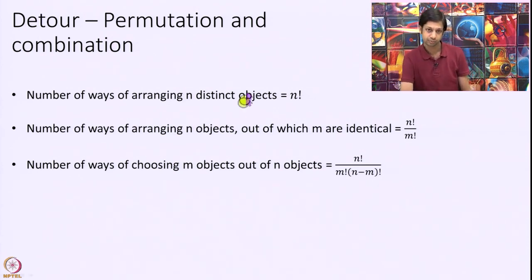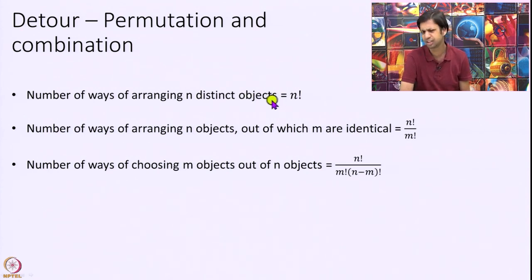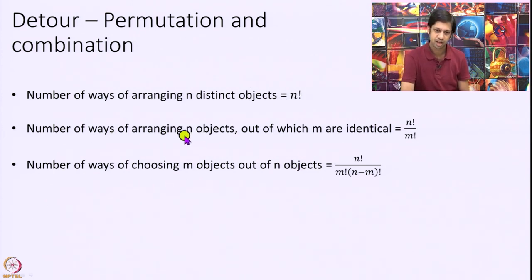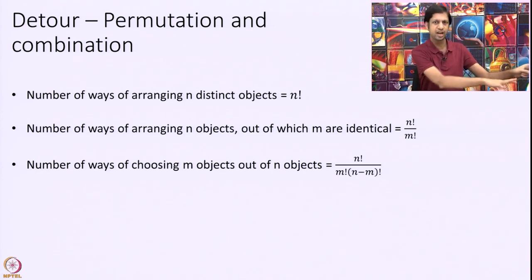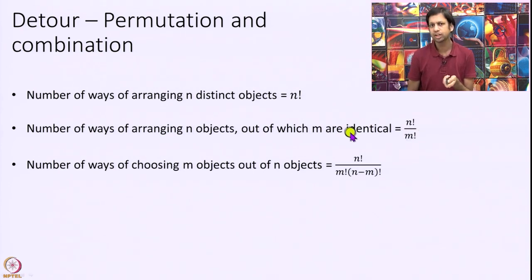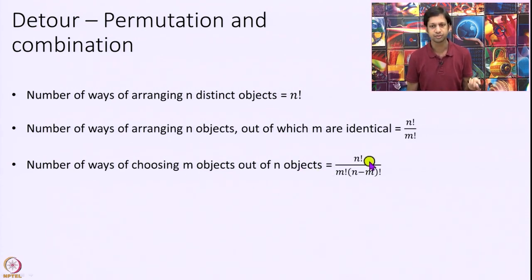Three principles: First, the number of ways of arranging N distinct objects is N factorial. Second, the number of ways of arranging N objects out of which M are identical is N factorial over M factorial — generalizing, if M1 and M2 are identical groups, it is N factorial divided by M1 factorial times M2 factorial. Third, the number of ways of choosing M objects out of N is N factorial divided by M factorial times (N minus M) factorial.